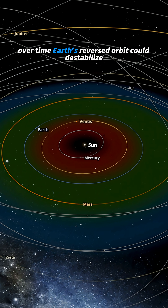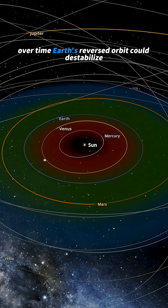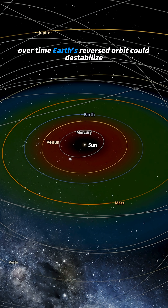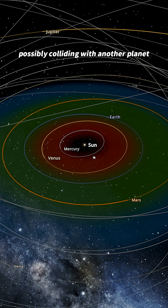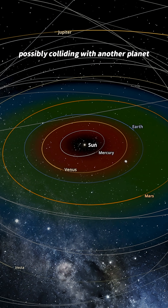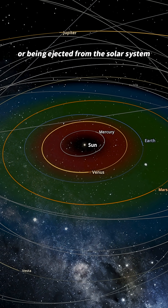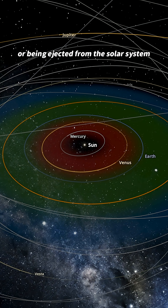Over time, Earth's reversed orbit could destabilize, possibly colliding with another planet or being ejected from the solar system.